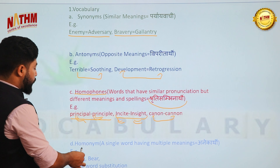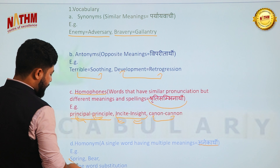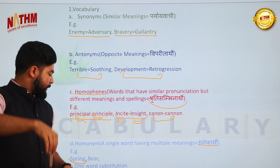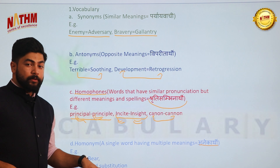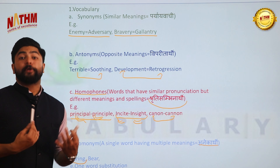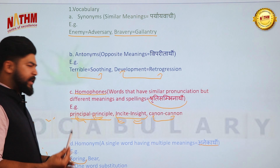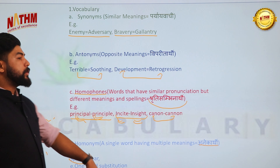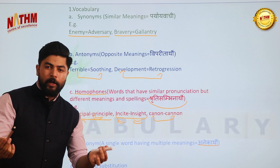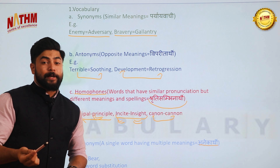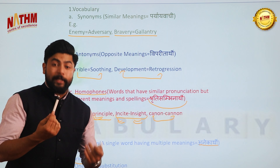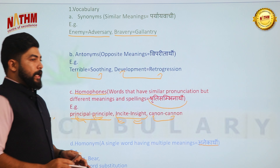Homonyms (anekarthi) are single words with multiple meanings — for example, spring can mean the season or a waterfall; bear can mean the animal, to tolerate/endure, or to produce (as in plants bear fruits). One-word substitution means replacing a descriptive phrase with a single word — for example, 'government of the people, by the people, for the people' is democracy; 'one who believes in God' is a theist.